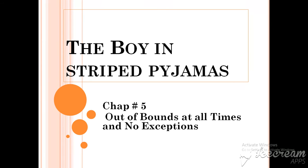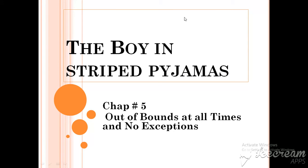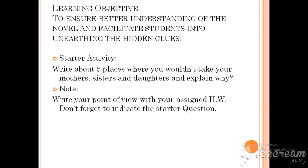This is our first lesson on GC and the topic is The Boy in Striped Pyjamas. We are going through chapter number five, Out of Bounds at All Times and No Exceptions. The learning objectives are to ensure better understanding of the novel and facilitate you into unearthing the hidden clues.